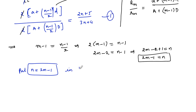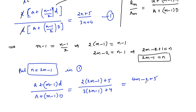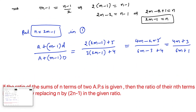Substituting n equals 2m minus 1 into the equation, the numerator becomes a plus m minus 1 into d and the denominator capital A plus m minus 1 into capital D. This equals 2 times of 2m minus 1 plus 5 upon 3 times of 2m minus 1 plus 4, which gives 4m minus 2 plus 5 upon 6m minus 3 plus 4, that is 4m plus 3 upon 6m plus 1. So the ratio of mth terms is 4m plus 3 upon 6m plus 1.